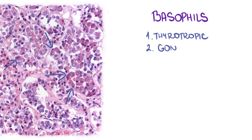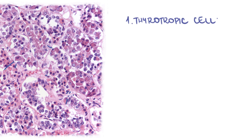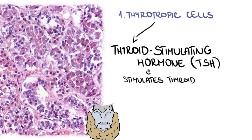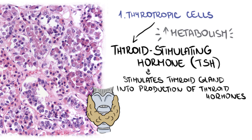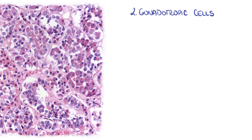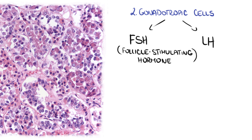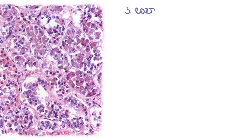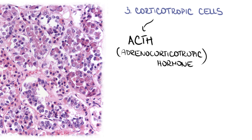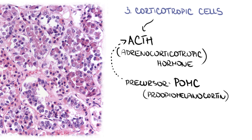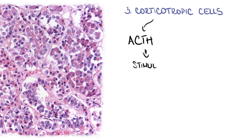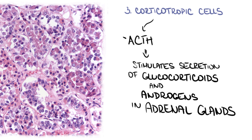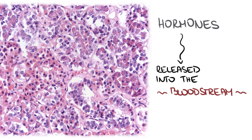Basophils include thyrotropic, gonadotropic, and corticotropic cells. Thyrotropic cells produce thyroid stimulating hormone, which stimulates the thyroid gland to produce thyroid hormones that increase the metabolic rate of almost every tissue of the body. Gonadotropic cells produce two hormones, FSH and LH, playing a role in spermatogenesis and testosterone production in men and regulation of the menstrual cycle in women. Corticotropic cells produce ACTH from its precursor POMC, or pro-opiomelanocortin, which also gives rise to other products such as MSH, endorphins, and enkephalins. In general, ACTH stimulates secretion of glucocorticoids and androgens in the adrenal glands. All aforementioned hormones are released into the bloodstream by a system of sinusoid capillaries.